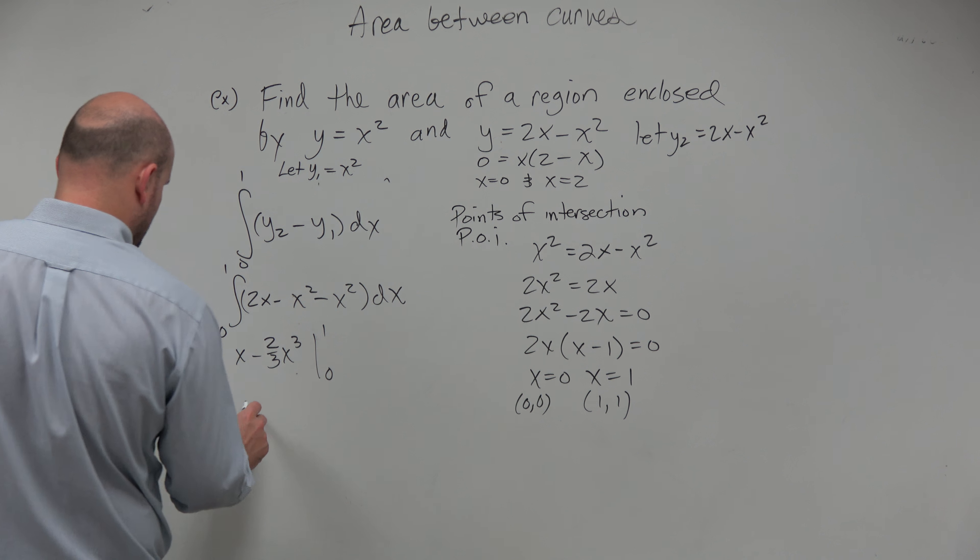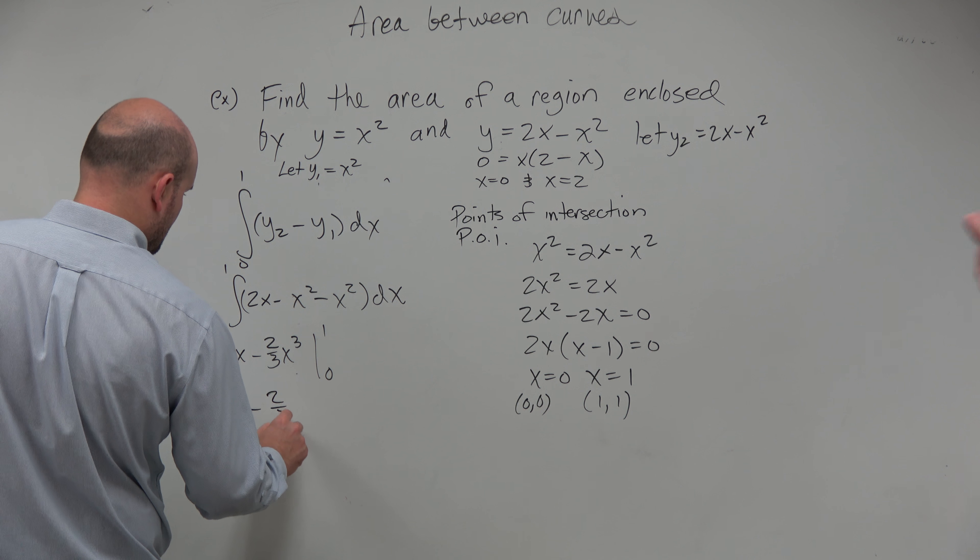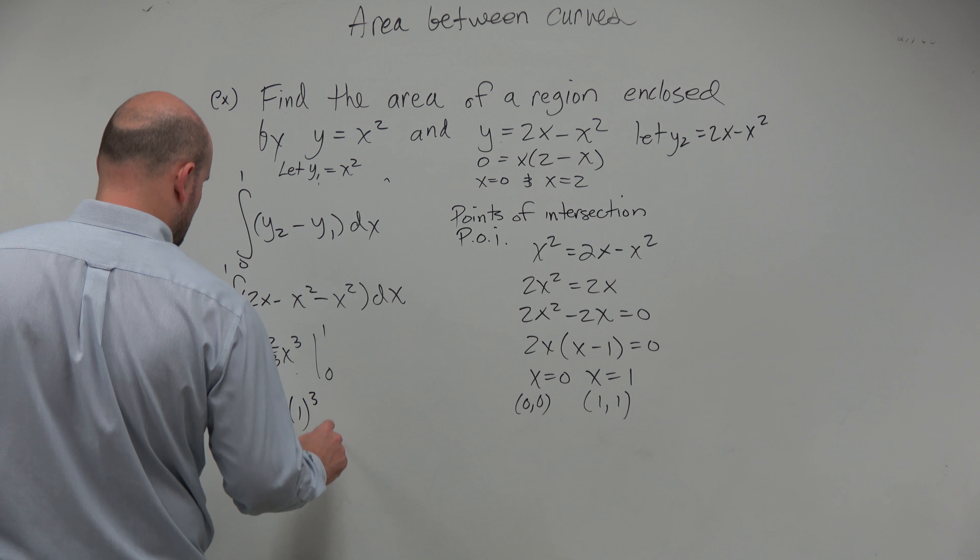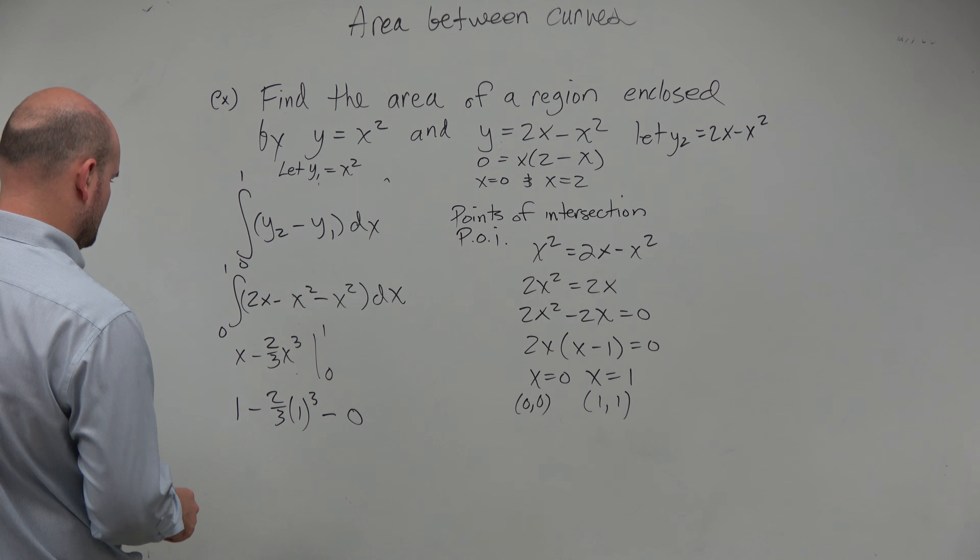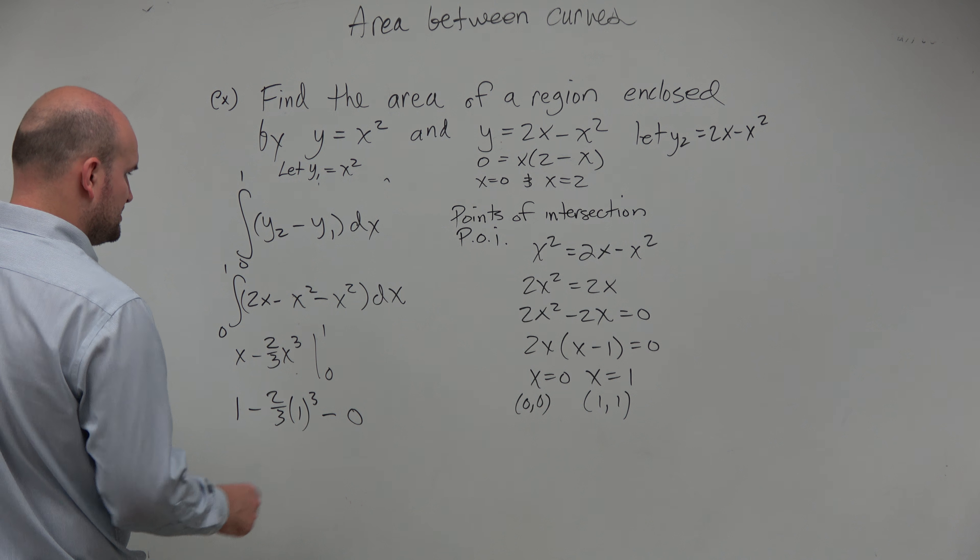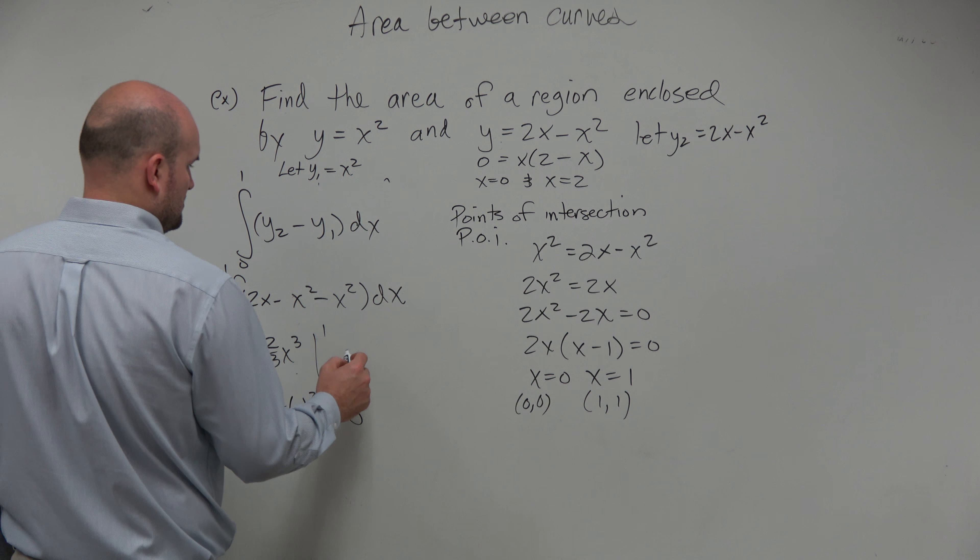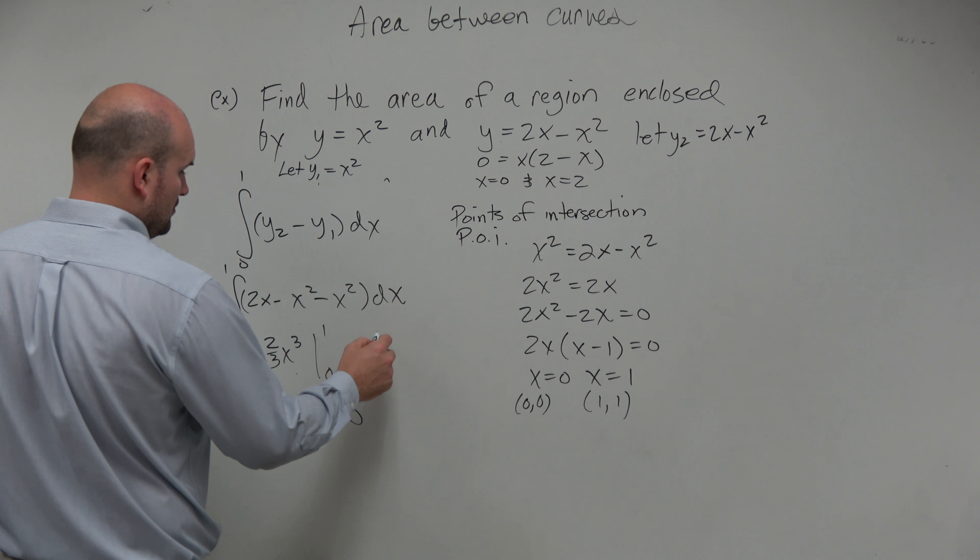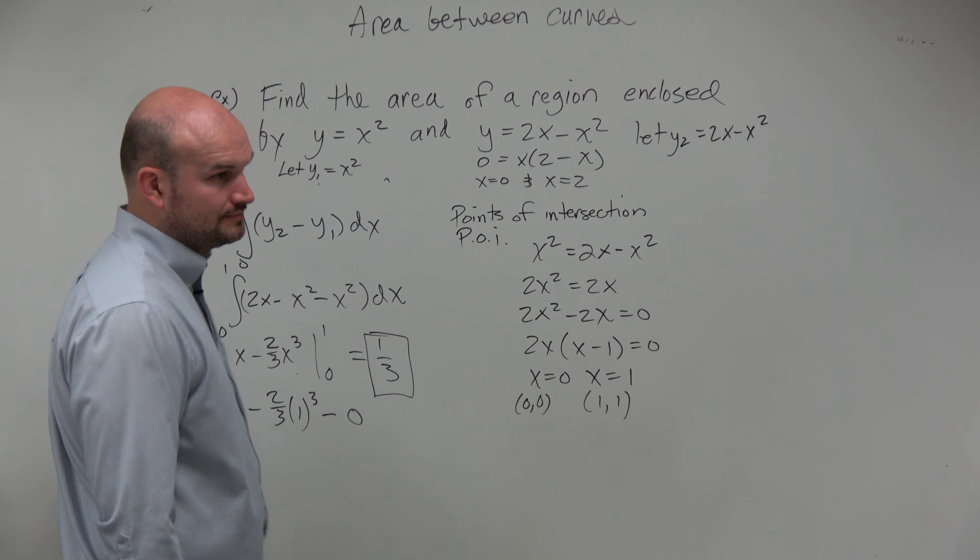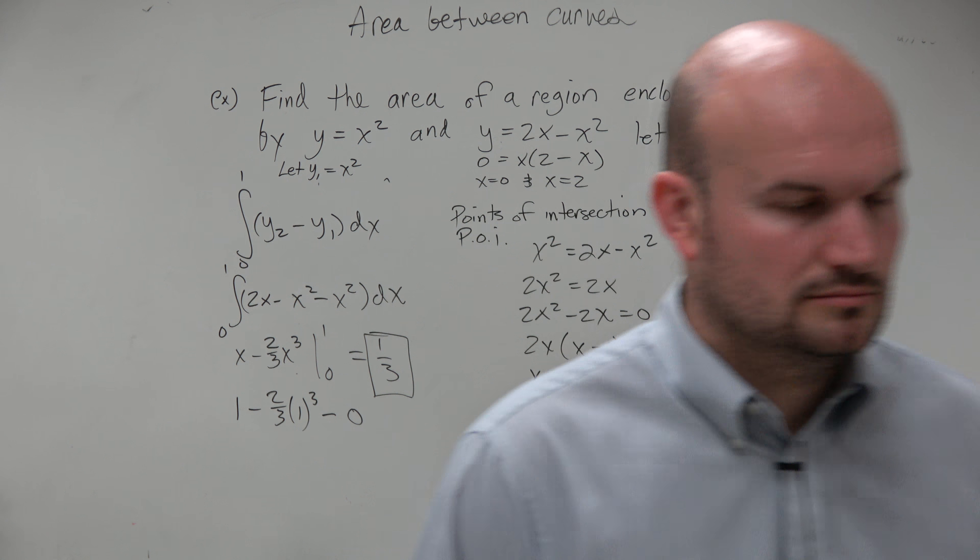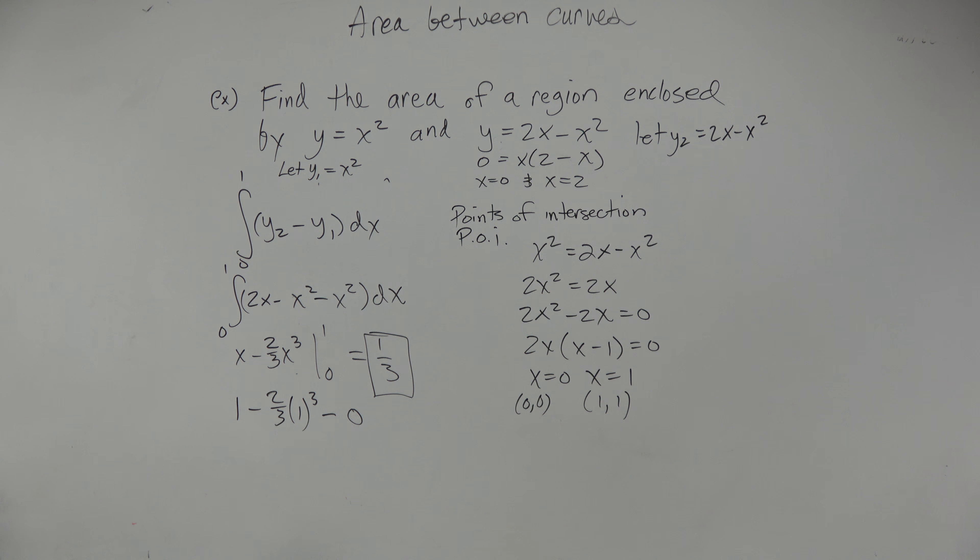And therefore, that's going to be 1 minus 2 thirds times 1 cubed minus 0. So I have 1 minus 2 thirds, which is going to equal 1 minus 2 thirds is 1 third, right? All right. Let's go ahead and try the calculator so we can see it.